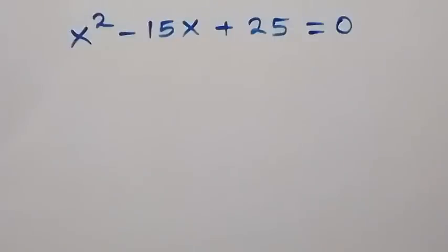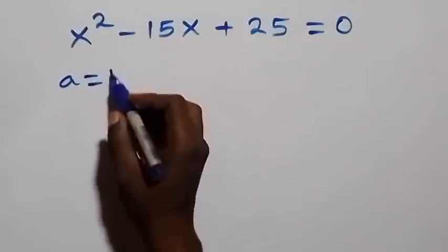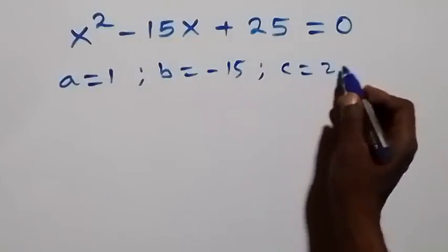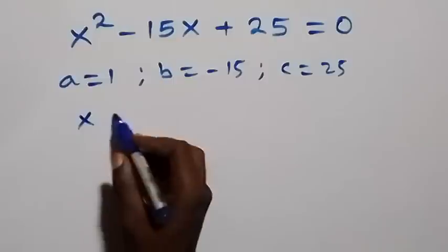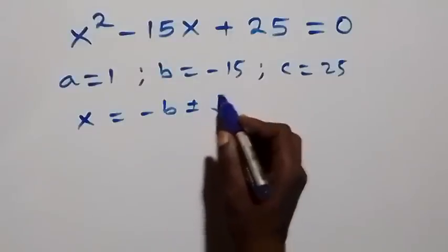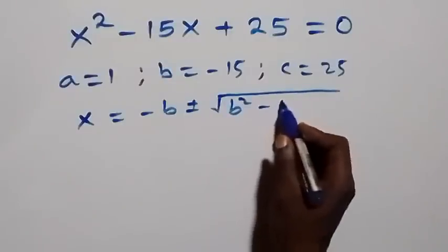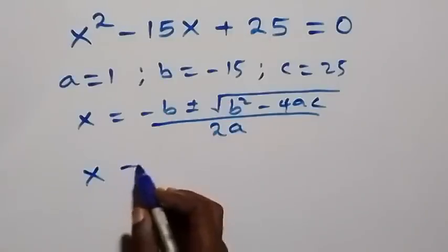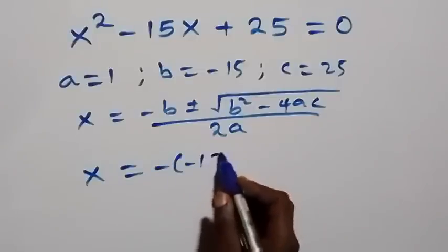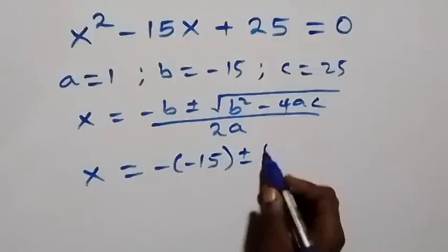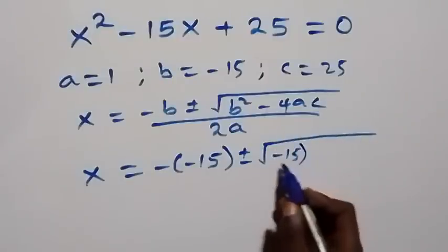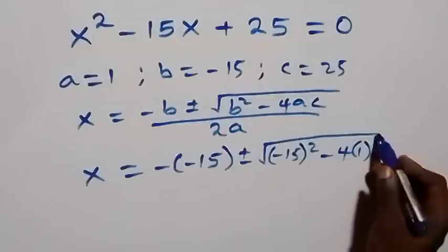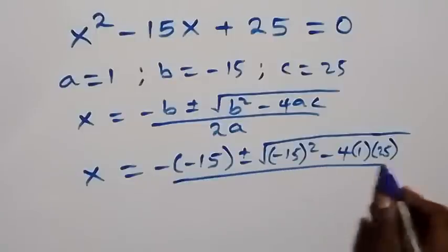We have a quadratic equation where a = 1, b = −15, and c = 25. Applying the quadratic formula x = (−b ± √(b² − 4ac)) / 2a, we get x = (15 ± √(225 − 100)) / 2.